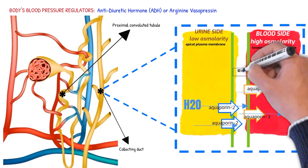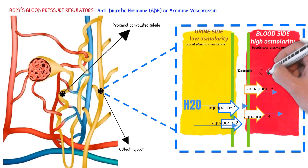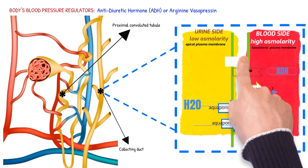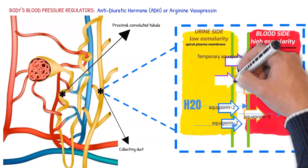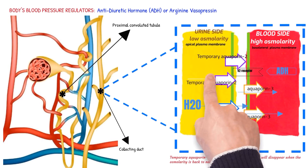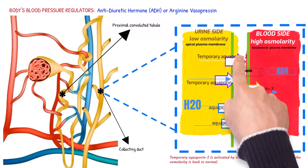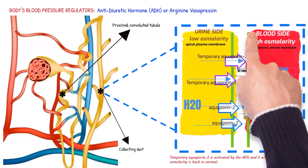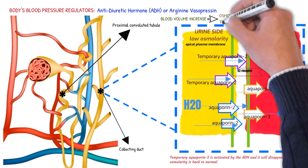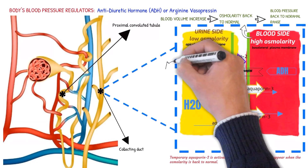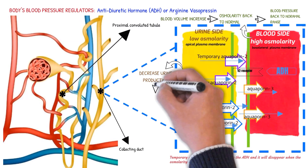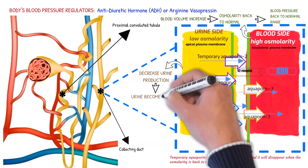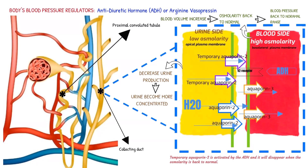These cells contain receptors for vasopressin that are linked to vesicles containing special water channels called aquaporins. When the cells are stimulated by vasopressin, the aquaporins fuse with the region of the cell membrane exposed to urine, allowing water to enter the cells. The water is then returned to the circulation. This causes the volume of urine to decrease and the urinary content of sodium, chloride, and other substances to increase. When this occurs, the urine is said to be concentrated.